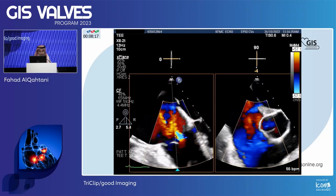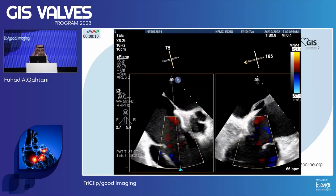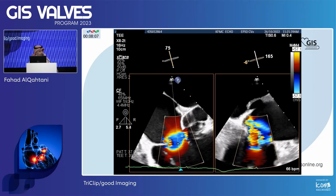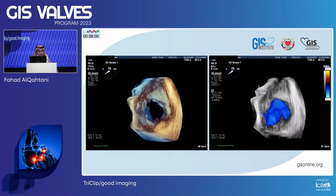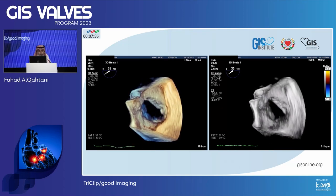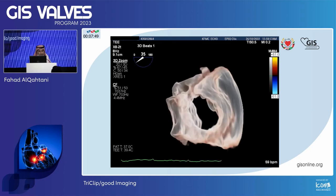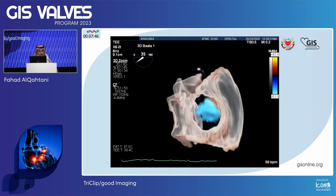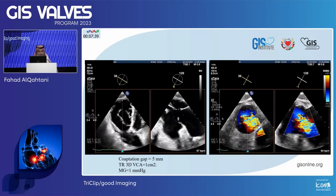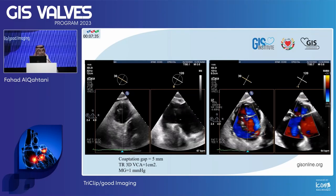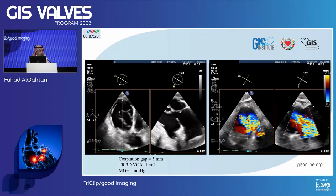Going with the TEE for screening confirmed the torrential TR — you can see this in the RV inflow and outflow. Torrential TR mostly between the septal and anterior leaflets. This is the 3D also showing the gap and the jet that is central, between the anterior and septal. This is the deep gastric view showing all three leaflets; coaptation gap was 5 mm and TR vena contracta 1 cm with a mean gradient of 1.